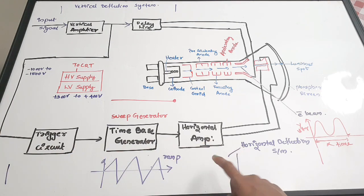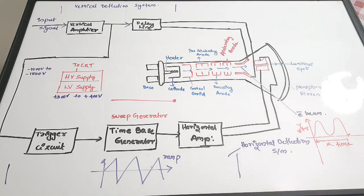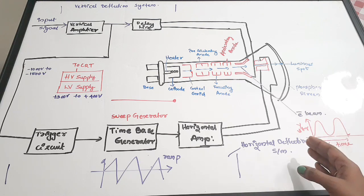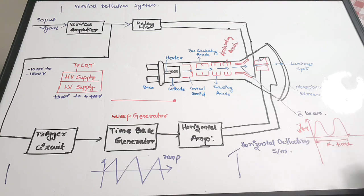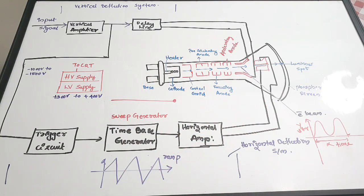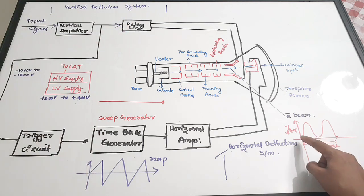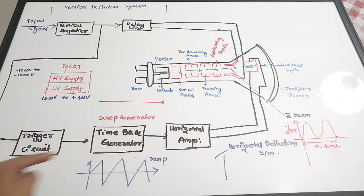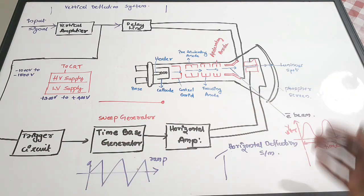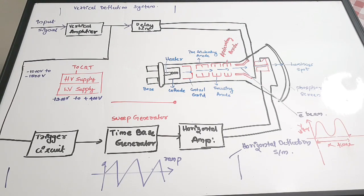The horizontal amplifier amplifies the horizontal signals and feeds them to the horizontal deflection plates. So the vertical system gets an external input to extract voltage values, while the horizontal system internally generates the time. The trigger circuit keeps both systems in sync so the final waveform has correct voltage levels on the vertical axis and correct time on the horizontal axis.